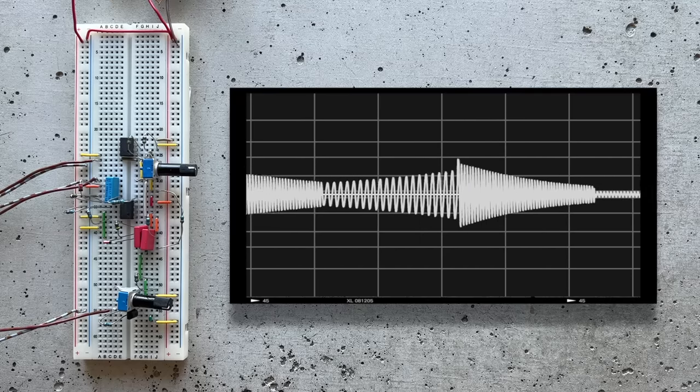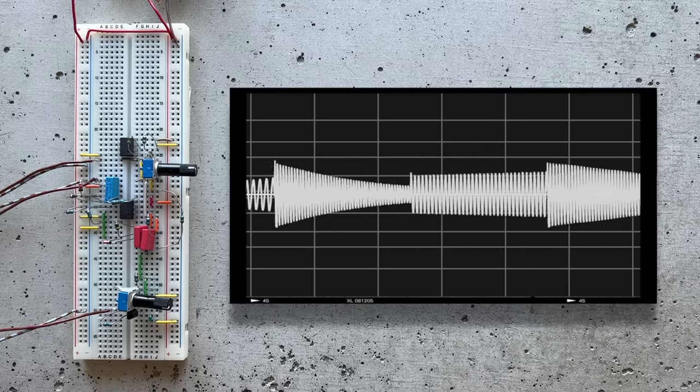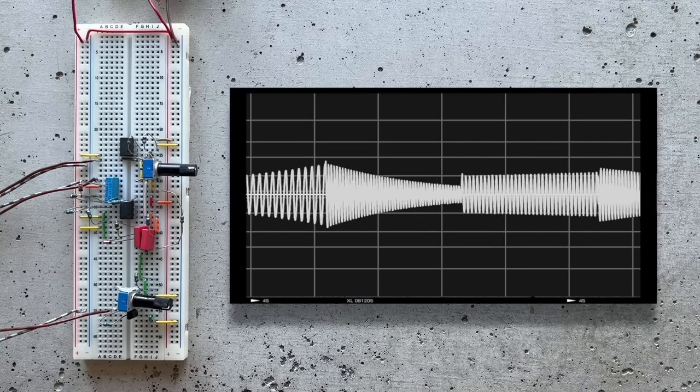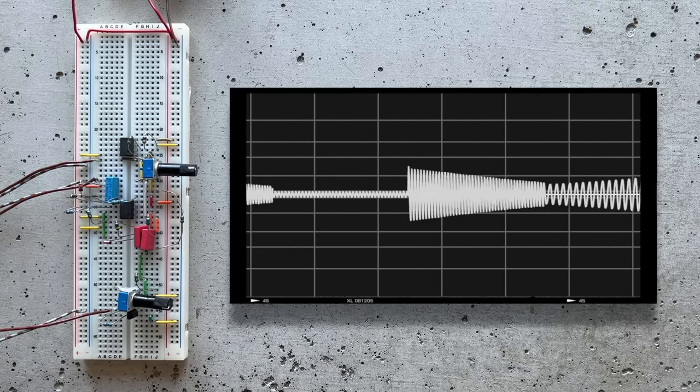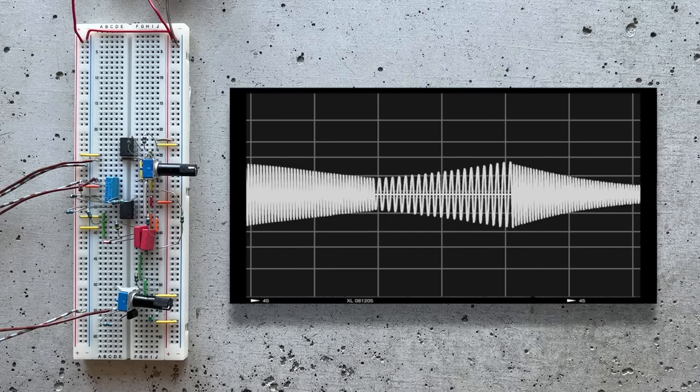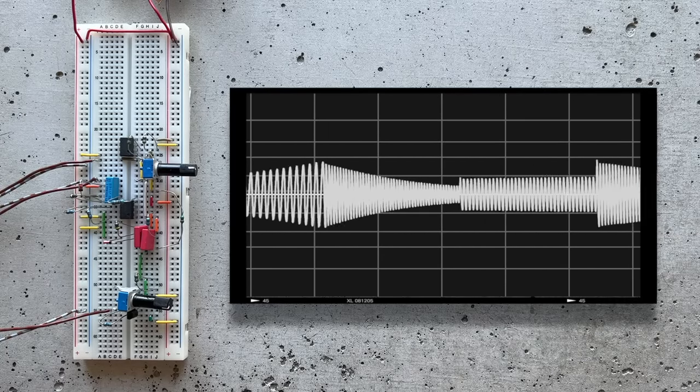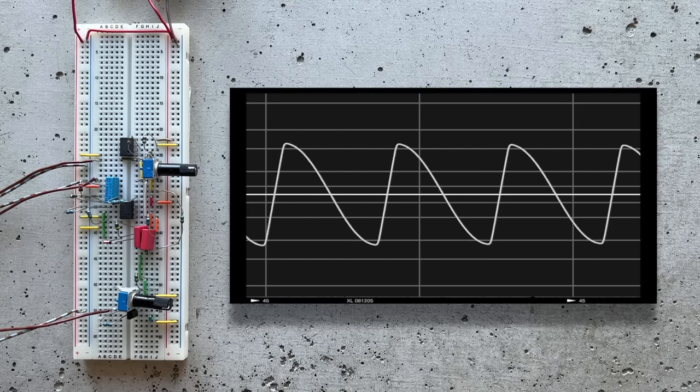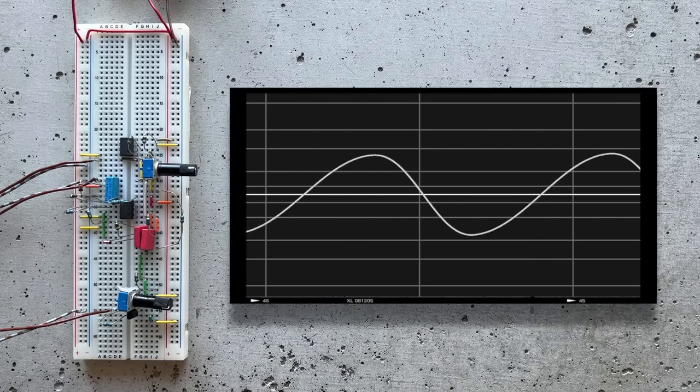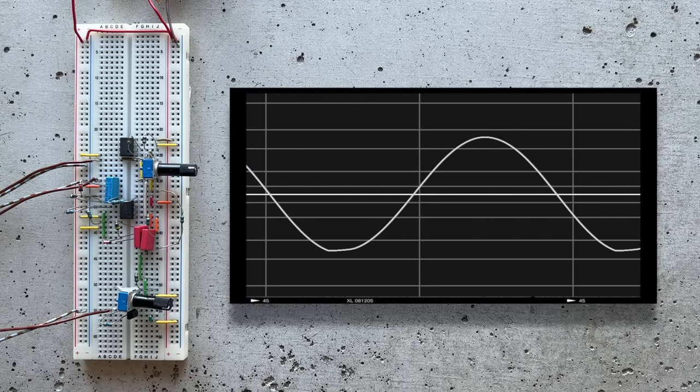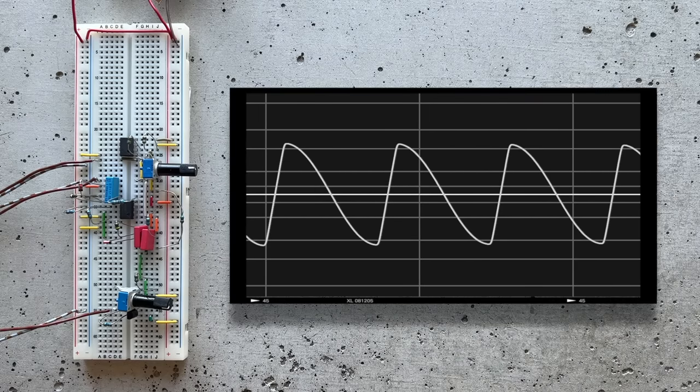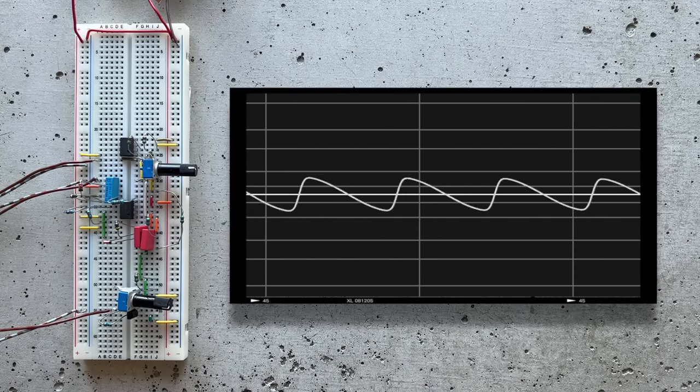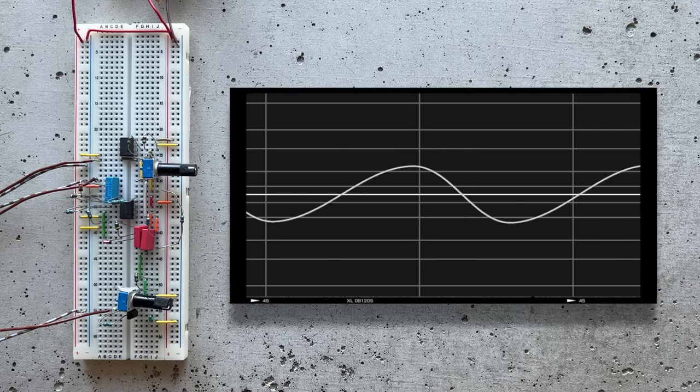But what about the caveats I mentioned earlier? Does this mean you can plug in NPN transistors anywhere you need a voltage controlled resistance? Let's take a closer look at the actual waveform our oscillator now produces. For that, I'll zoom in on the oscilloscope's x-axis. For comparison, I'll unplug the CV input. And here it is with the CV plugged back in. Curiously, the clean sine wave we get without CV morphs into something like a rounded sawtooth. What's up with that?